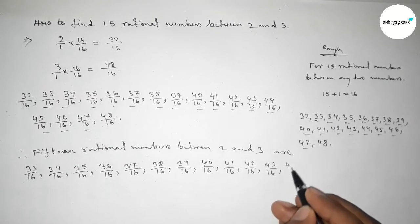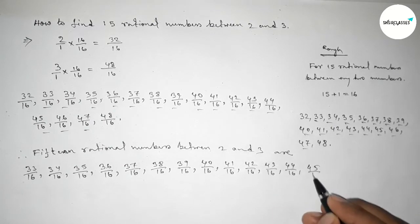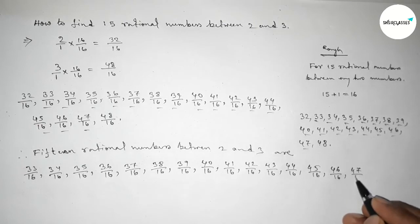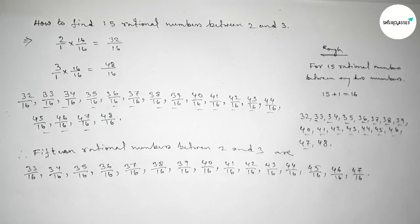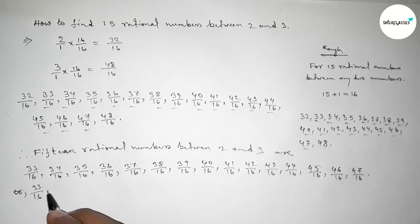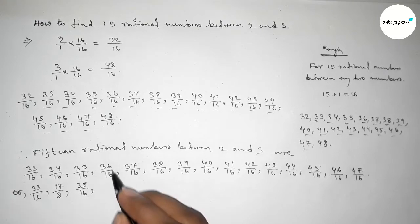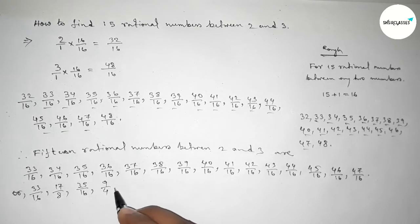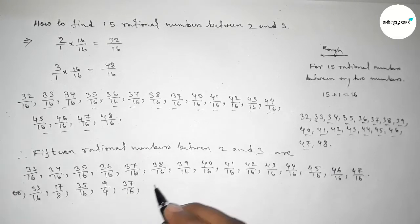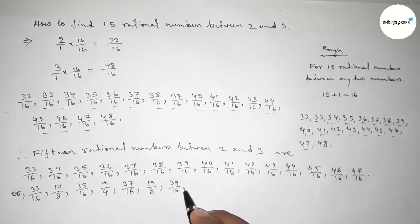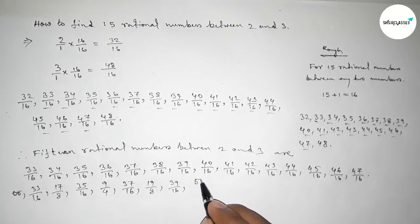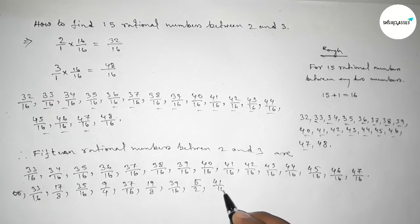Or we can write: this is 33 over 16, if we divide both numbers by 2 then 17 over 8, and if we divide both numbers by 4 then 9 over 4. If we divide both numbers by 2 then 19 over 8.